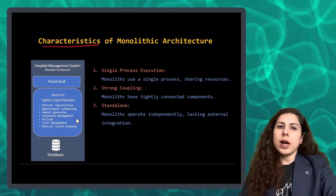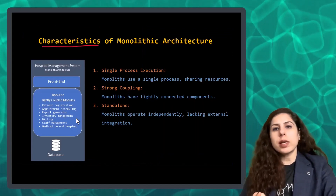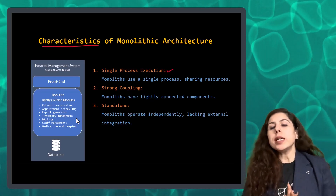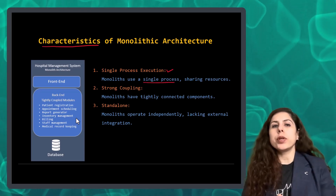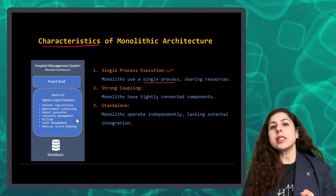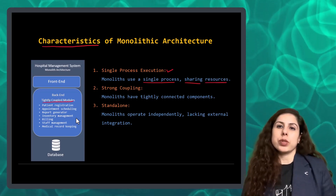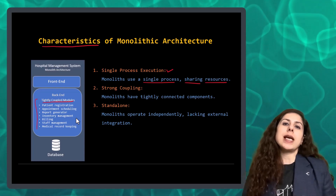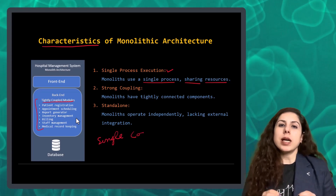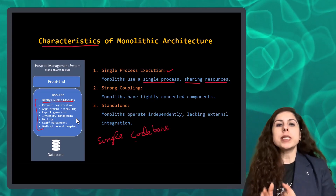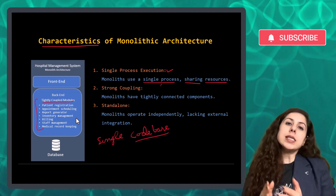Let's look at some of the characteristics of monolithic architecture. First, single process execution. In a monolithic system, all software components operate within a single process. They lack distribution — meaning components share threads, memory, and compute resources, all functioning as a large code base. It might be possible that the database runs as a separate process, but all business functionality or components will run inside a single process.